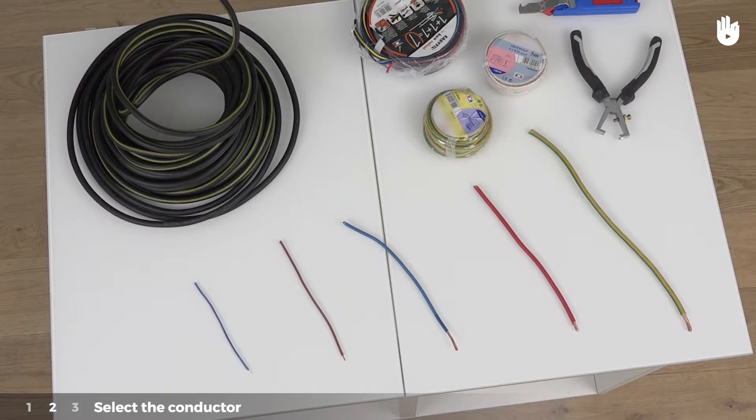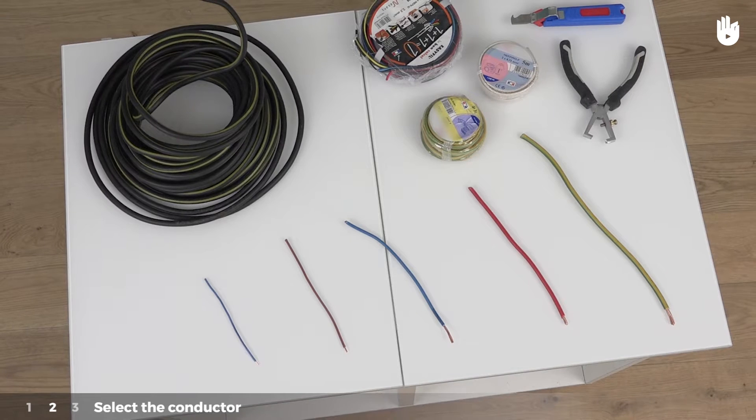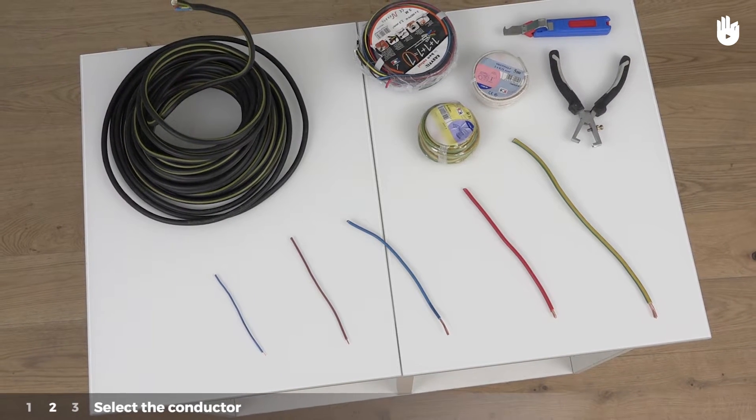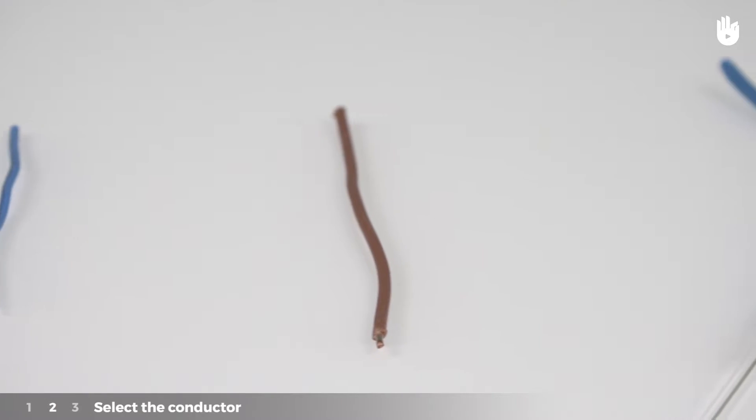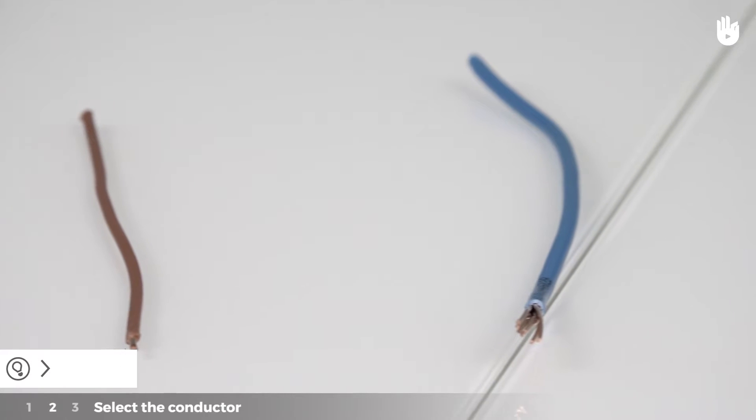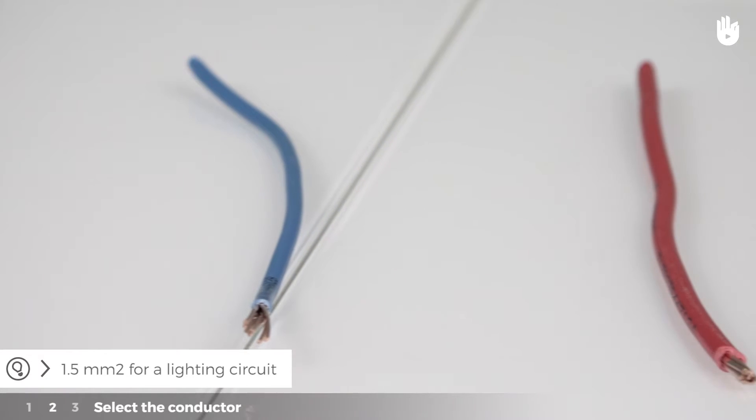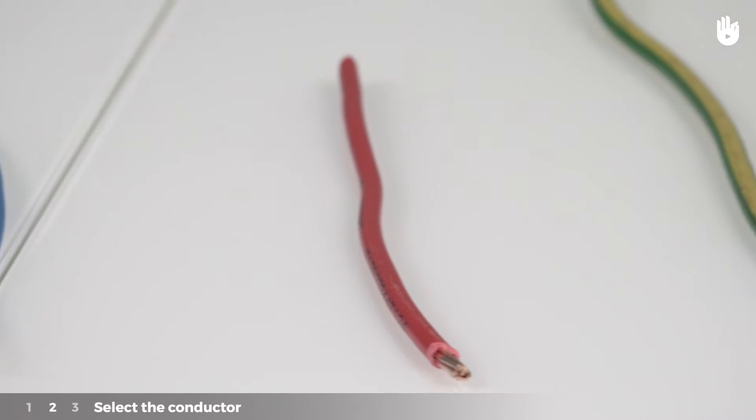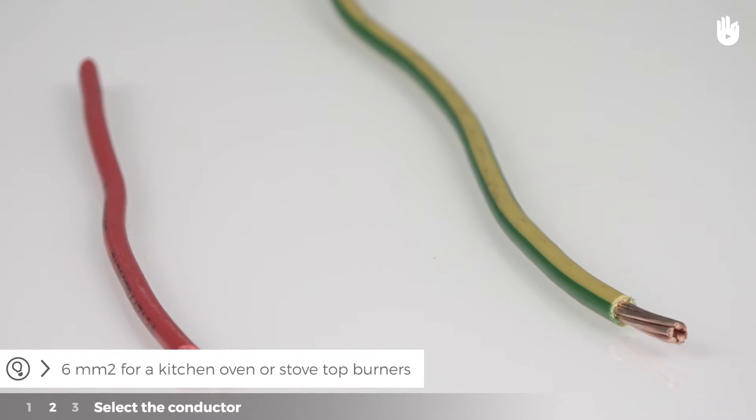Step 2: Select the conductor. The cross section, in other words the diameter of the conductor, varies depending on the type of circuit. The size may range from 1.5mm² for a lighting circuit to 6mm² for a kitchen oven or hot plate.